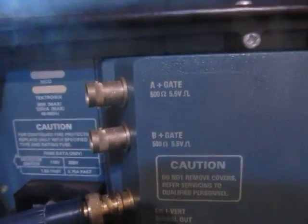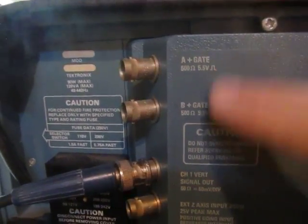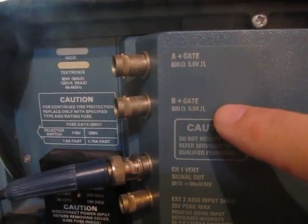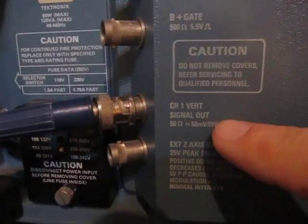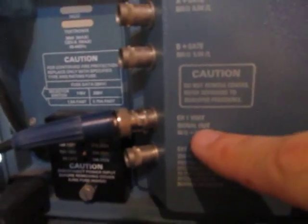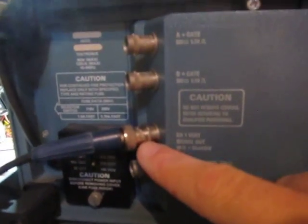There's an A-gate, same as what I mentioned earlier - A-gate and B-gate. These go high when the A and B sweeps are active. But this one here is the channel 1 signal output. I've got a BNC connected to that because we're going to take a look at that. So what that's doing is it's a buffered output of the signal that's being applied to channel 1 on the scope.